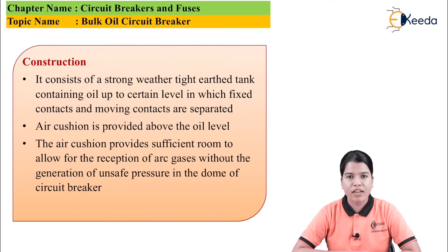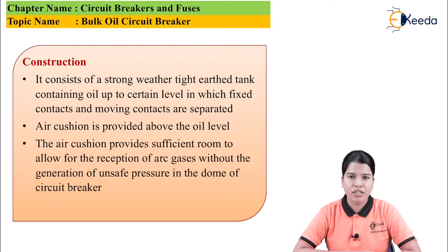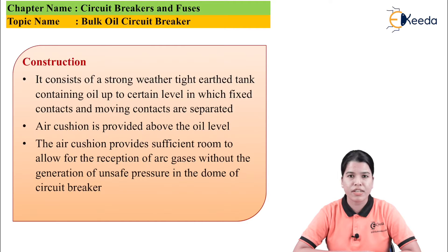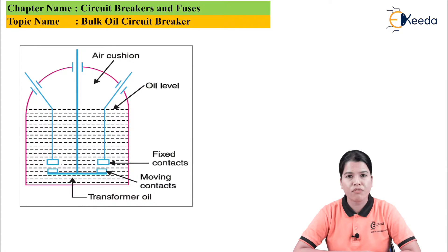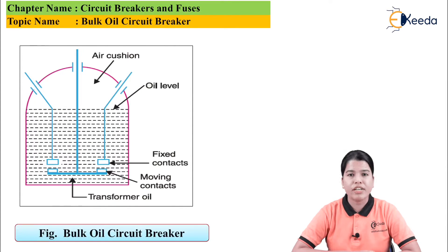An air cushion is also provided above the oil level. The main function of the air cushion is to provide sufficient room for the expansion of gases, so that as the gas expands, there is no extra pressure on the dome of the circuit breaker. The figure shows the diagram of the bulk oil circuit breaker.